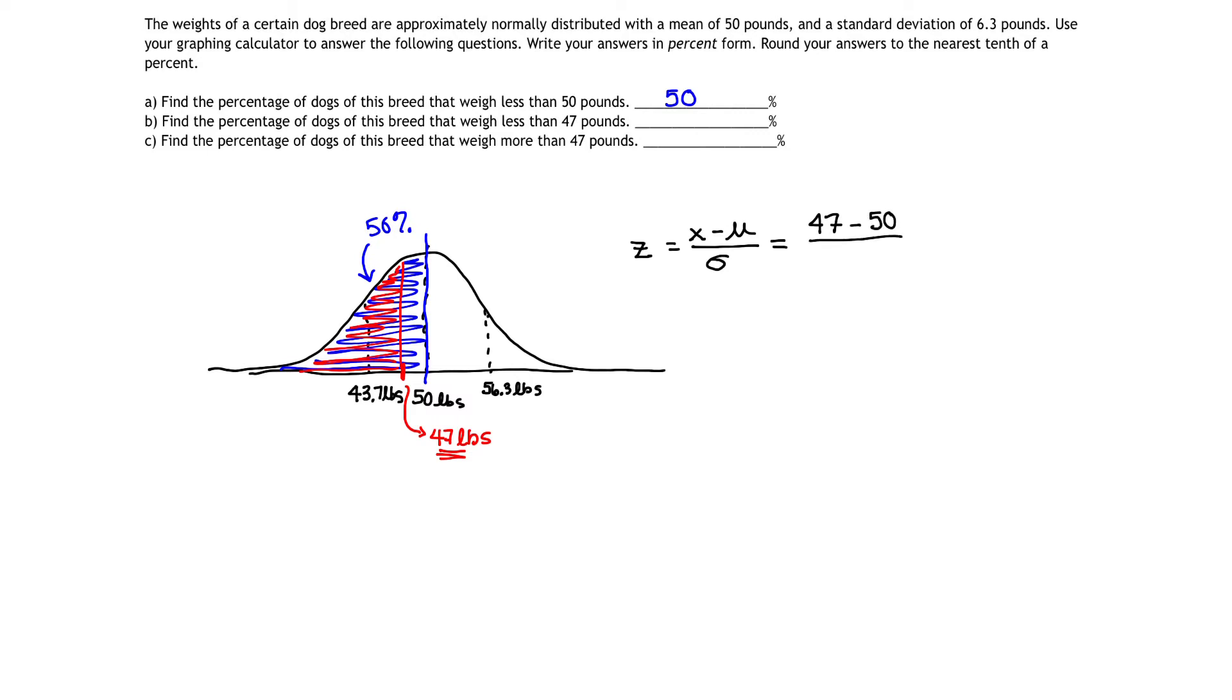So to calculate my Z score corresponding to 47 pounds, I would get 47 minus 50. And that's negative 3 divided by 6.3. So if I divide that by 6.3, that gives me negative 0.47619, etc. So the Z score that corresponds to 47 pounds is actually negative 0.47619.